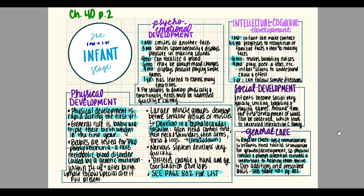In order for infants to develop physically and emotionally, their needs must be addressed quickly and calmly by the adults in their life. It's important that babies have a solid, quick, calm response to their emotional as well as physical needs. We also add intellectual/cognitive development as a factor in this stage.